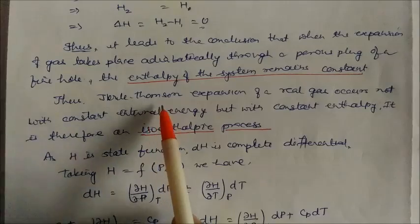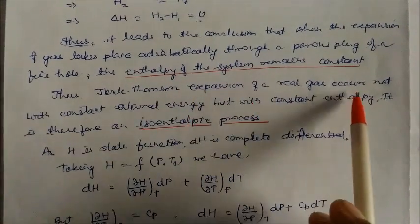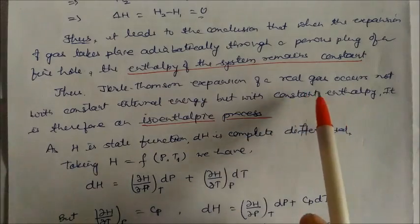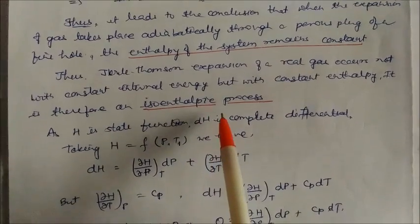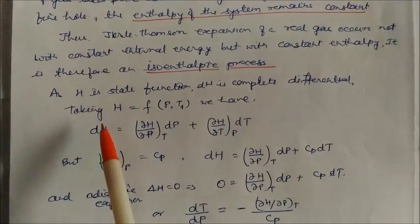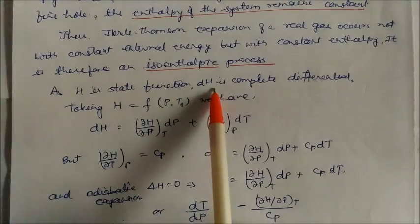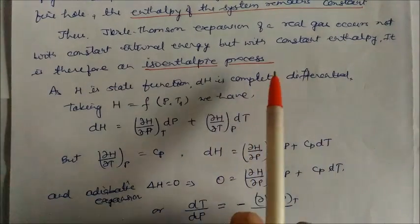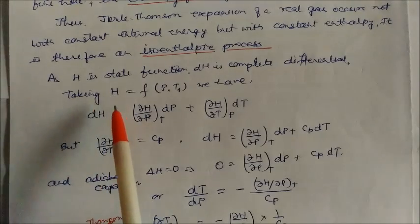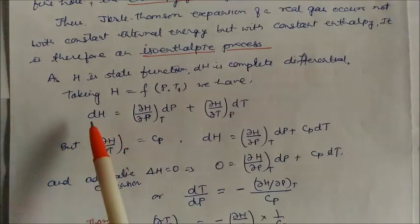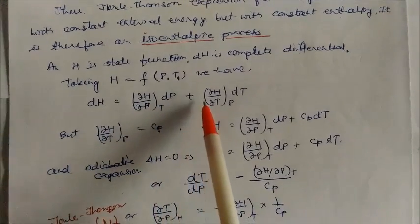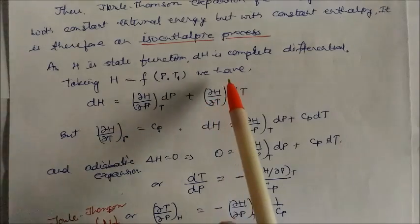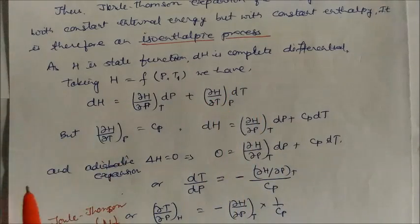Thus, the Joule-Thomson expansion of a real gas occurs not with constant internal energy but also with constant enthalpy. Both internal energy and enthalpy are constant. This is called an isenthalpic process. Since H is a state function, delta H has a complete differential. H is a function of pressure and temperature.